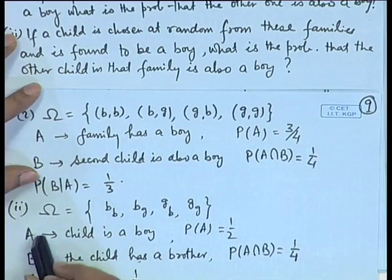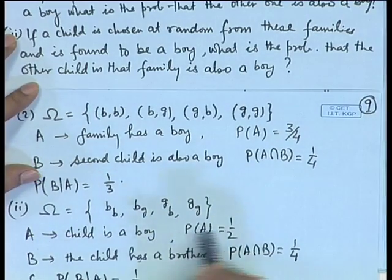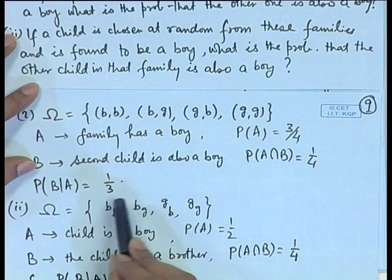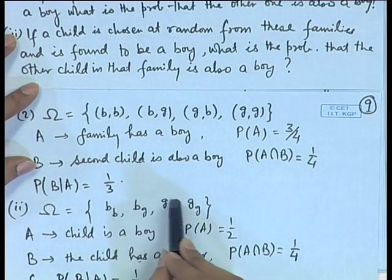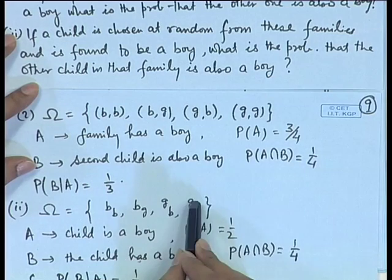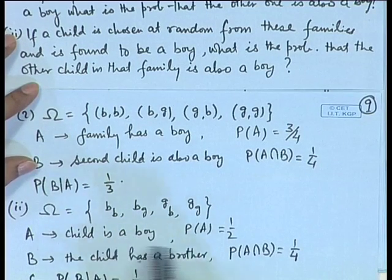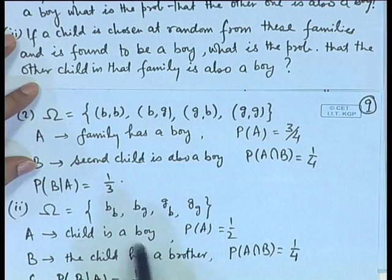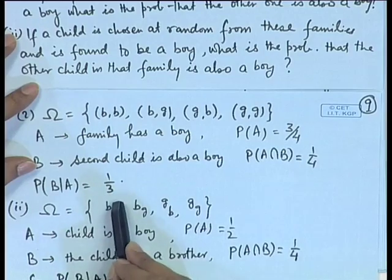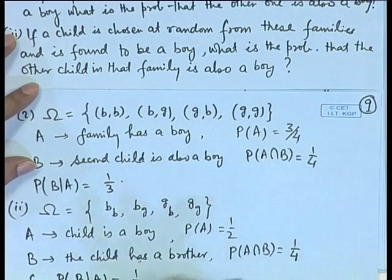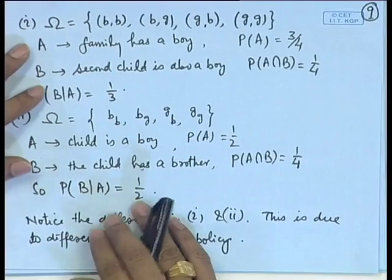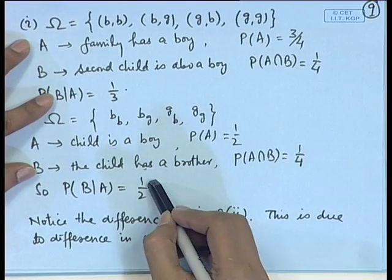What is the probability that the child is a boy? It will simply be half, because it could be a boy or a girl — both having two possibilities. If B is the event that the child has a brother, then probability of A intersection B — the child is a boy and has a brother — is 1/4. So probability of B given A becomes half.